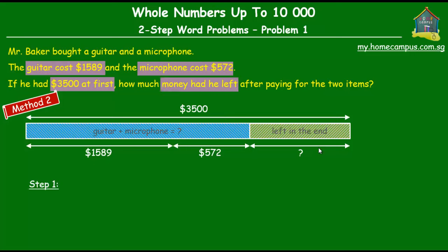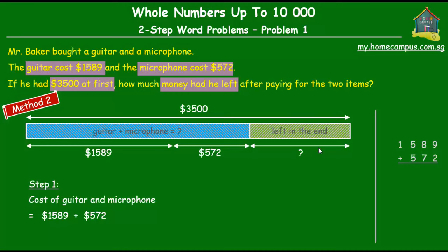Step 1: find the total cost of the guitar and microphone together — $1589 plus $572. Working: 9 plus 2 is 11, regroup; 1 plus 8 plus 7 is 16, regroup; 1 plus 5 plus 5 is 11, regroup; 1 plus 1 is 2. If you're unsure about addition with regrouping, check the tutorial on that topic. So $1589 plus $572 equals $2161.